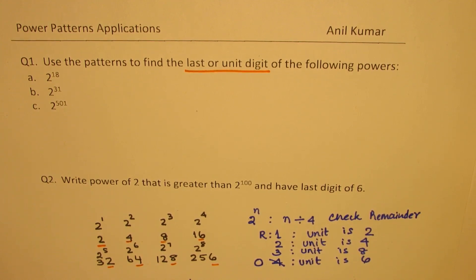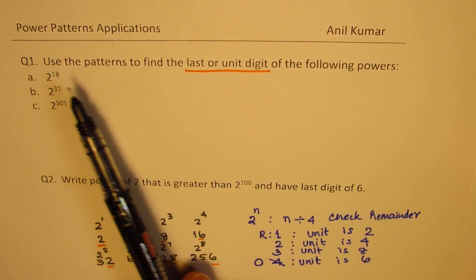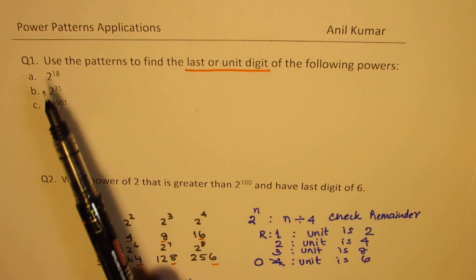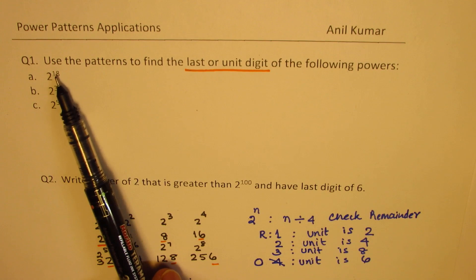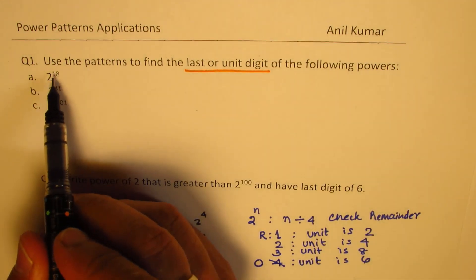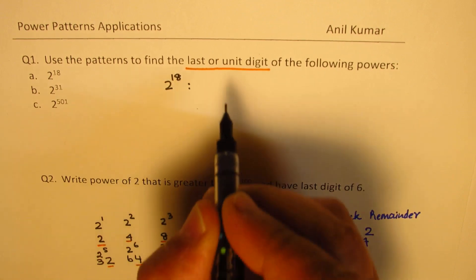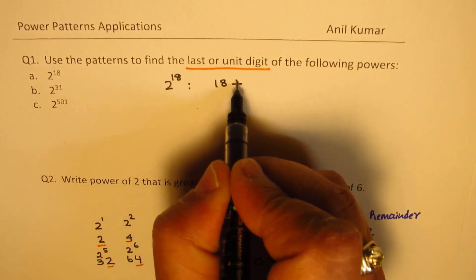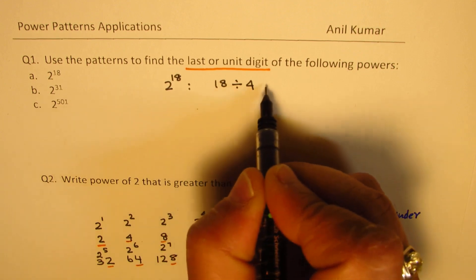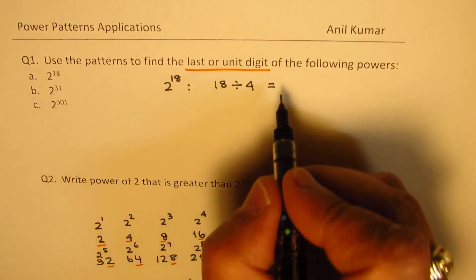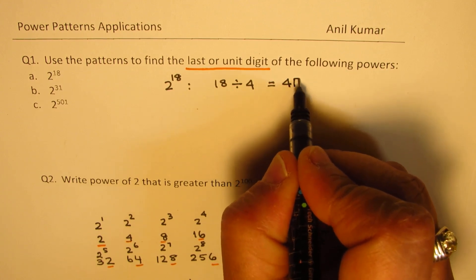Now, let us see how to answer it. It says use the patterns to find the last or the unit digit of the following powers. Now, the power here is 2 to the power of 18. So, what we are going to do? To test 2 to the power of 18, you have to divide 18 by 4 and check the remainder. So, 4 goes 4 times, so it is 4, remainder 2.